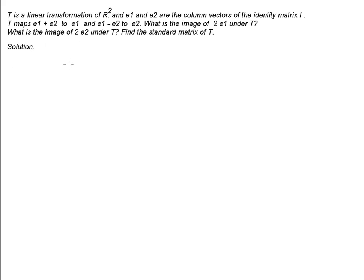We notice that twice E1 is simply the sum of these two vectors: E1 plus E2, and E1 minus E2.